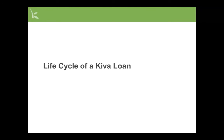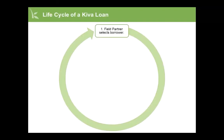Next, let's take a detailed look at the full lifecycle of a Kiva loan and learn about all the steps that are necessary to make the Kiva model work. The lifecycle starts when your organization selects a borrower for a Kiva loan. To qualify for a Kiva loan, the borrower must be taking a loan product that has been approved by Kiva. Next, you will collect the borrower's information and photo.